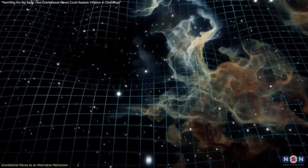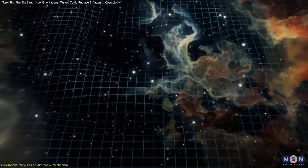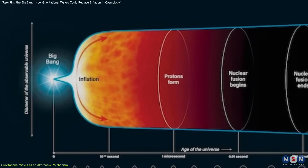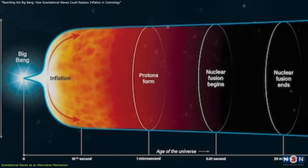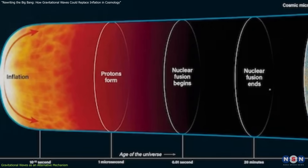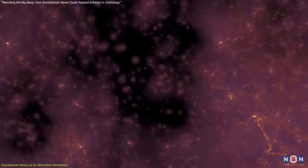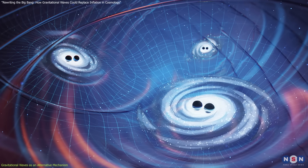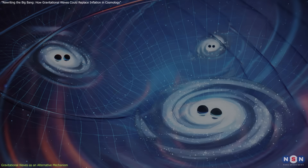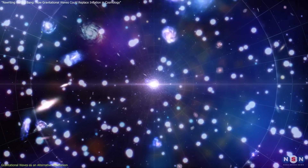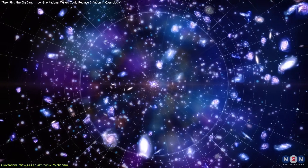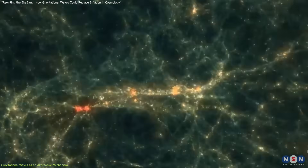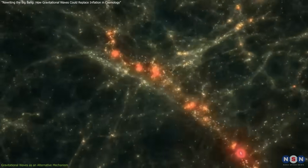While the gravitational wave model addresses some of inflation's shortcomings, it is not without challenges. For example, it must account for the transition from an early high-energy state to the radiation-dominated phase of the universe, where light and matter began to interact. Researchers propose that as gravitational waves amplified and collided, they created conditions for scalar perturbations to dominate, ending the inflation-like phase. This transition mirrors some aspects of the traditional reheating process, but arises from different principles.